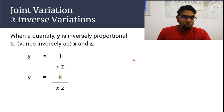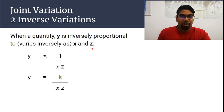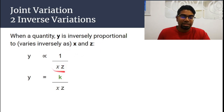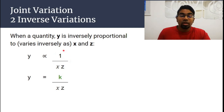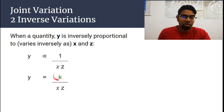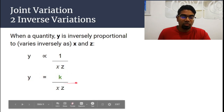Now what about two inverse variations? When a quantity y is inversely proportional to x and z, we write it as y is proportional to 1 over x multiplied by z. As long as it's inversely proportional, we write the unknowns in the denominator. If it's directly proportional, we write it as the numerator. So if it is inversely proportional, it is the denominator of the fraction. When we want to make it into an equation, we add the variation constant k, and it becomes y equals to k over xz.